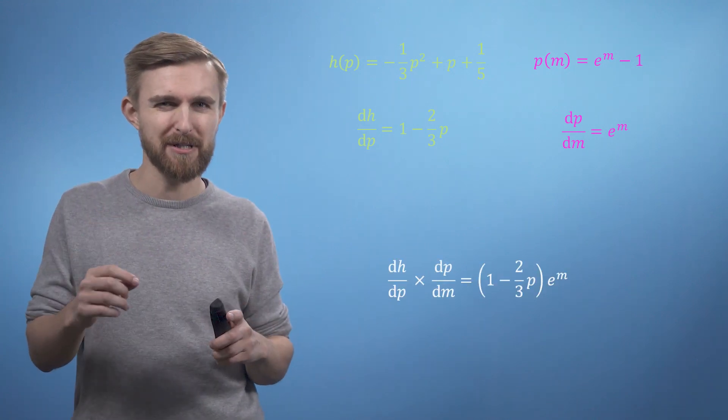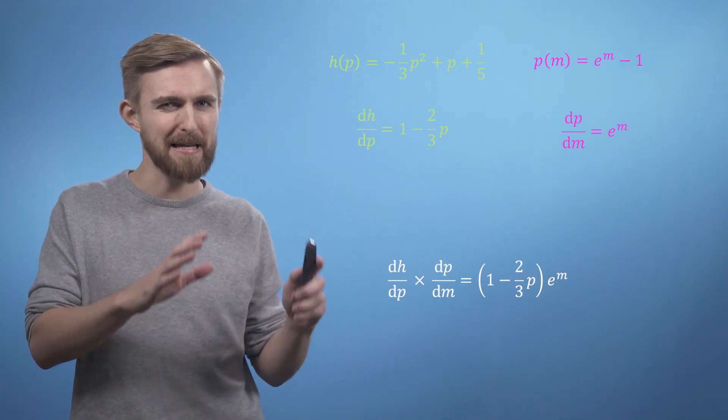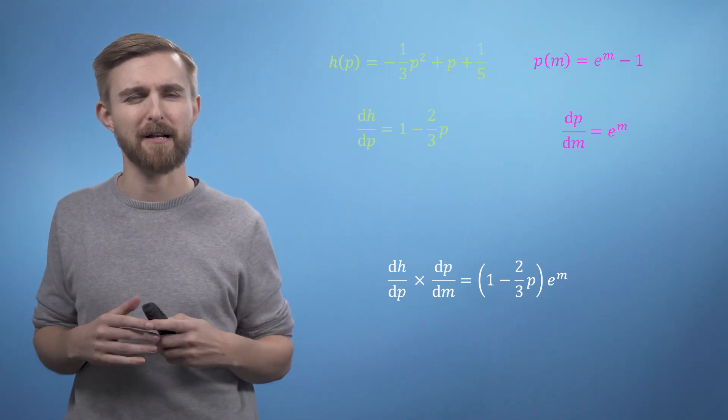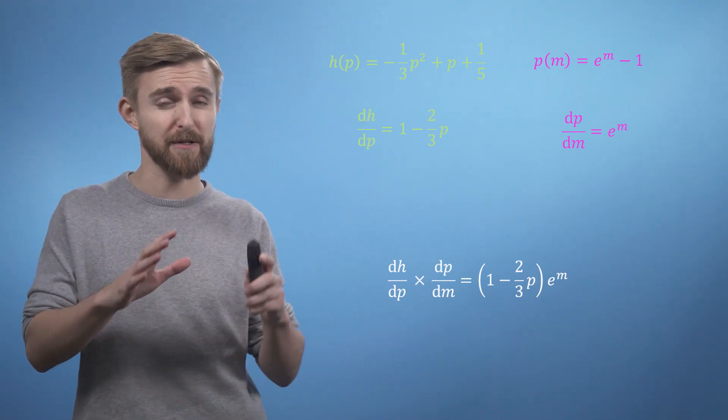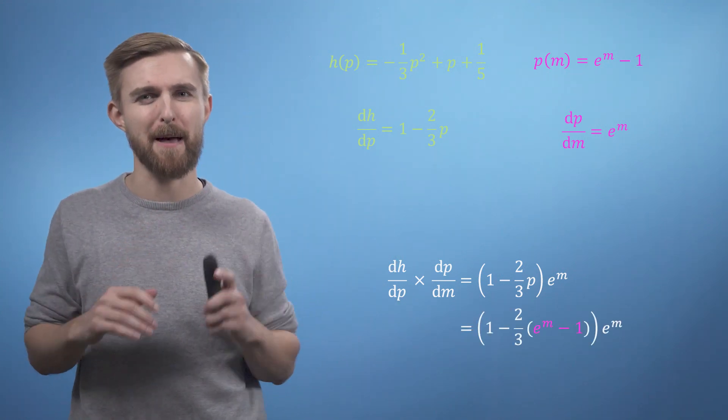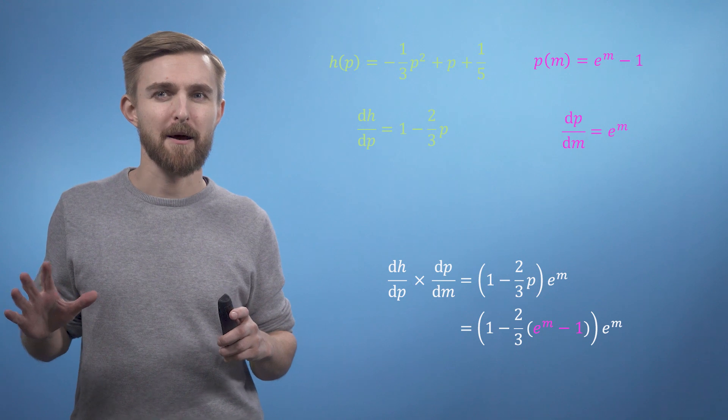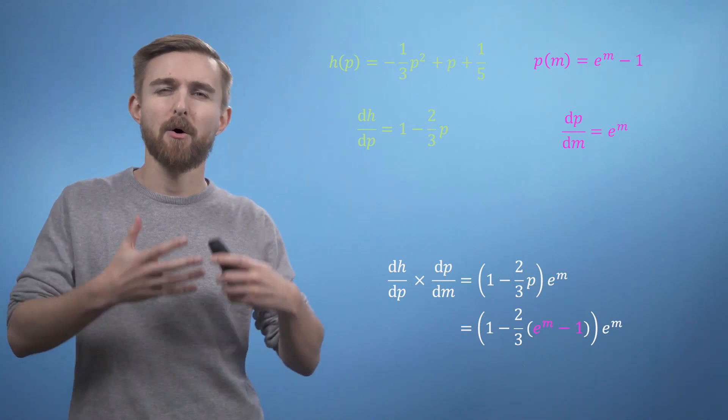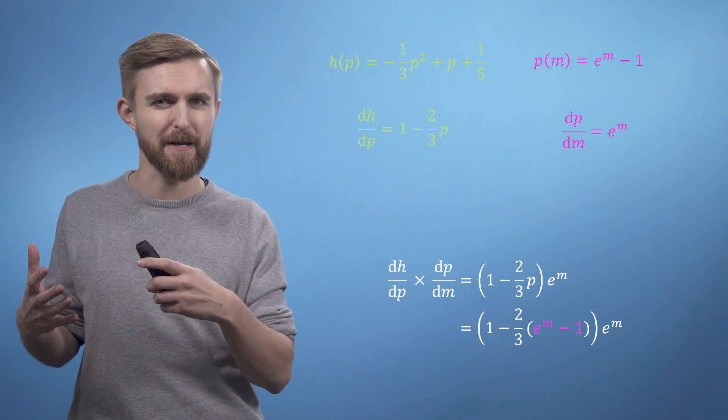However, we just need to remember that if we don't want pizza's P to appear in our final expression, then we just need to sub in our expression for P in terms of M. And then finally, by simply rearranging the terms, we recover the expression that we saw at the start of the video.